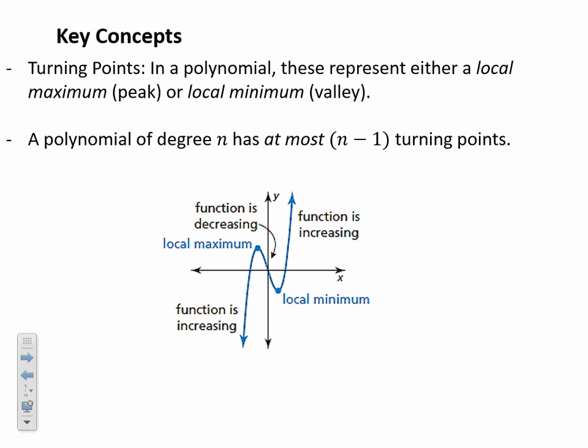Turning points represent either a local maximum — a peak in the graph — or a local minimum — a valley. If a polynomial has degree n, it has at most n minus one turning points. This means a fourth-degree function could bend only once, for instance. This idea helps us understand how a function with a certain degree could behave.